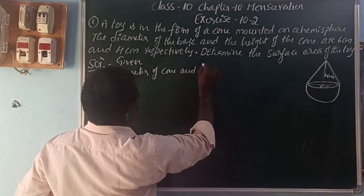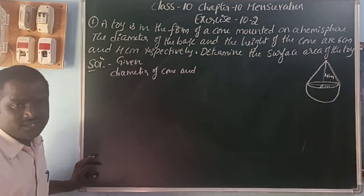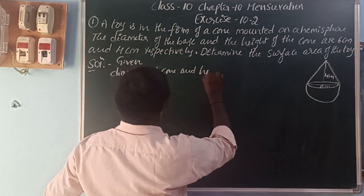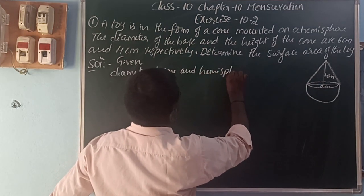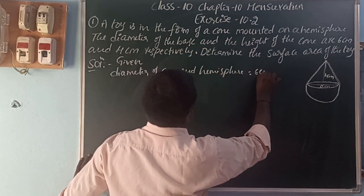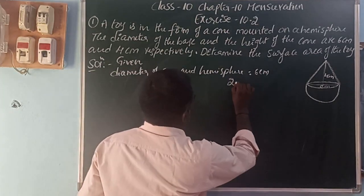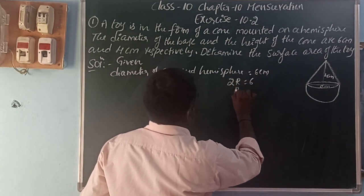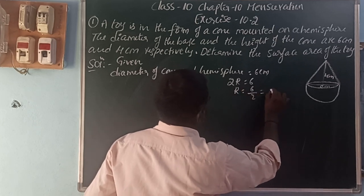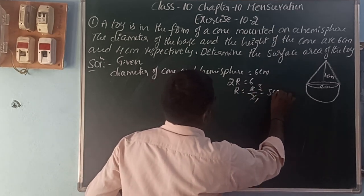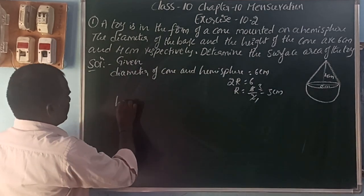Given: common diameter for cone and hemisphere is 6 centimeters. So diameter is 2 times radius, 2r equals 6 centimeters, r equals 6 divided by 2, that is 3 centimeters.